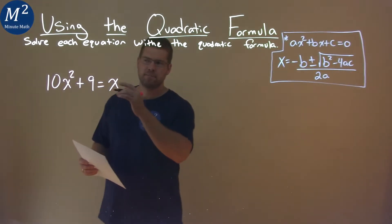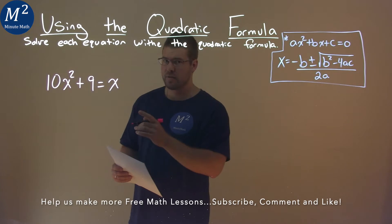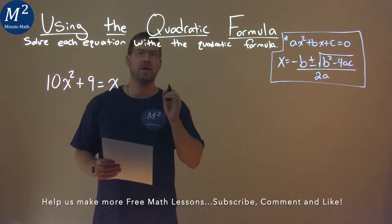We're given this problem right here: 10x squared plus 9 equals x, and we need to solve this using the quadratic formula.